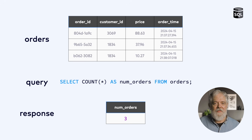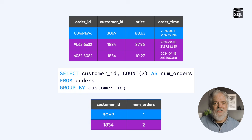Databases respond to queries like this one, and the result of this query is a number telling us how many rows of data are in the orders table right now. To compute this result, the database will scan through the table counting the rows. This is a brute force, batch-oriented approach that touches all of the relevant data and produces a result. Here's an interesting variation on that query: instead of counting all of the orders, we are asking the database to partition the orders by customer and count them on a per customer basis. Now we can see that those three orders are divided across two customers, as shown in the table of results.